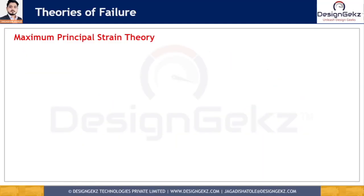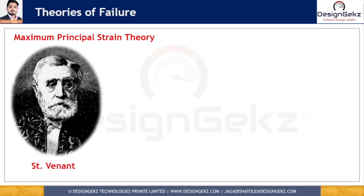The maximum principal strain theory is more appropriate and more suitable for all types of materials — ductile material, brittle material, and for materials under hydrostatic pressure. This theory was proposed by scientist Saint Venant, which is why this theory is also referred to as Saint Venant's theory.